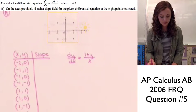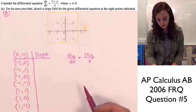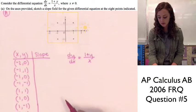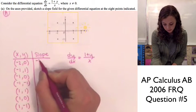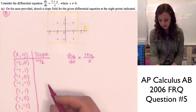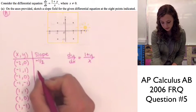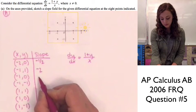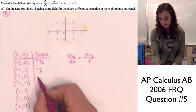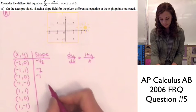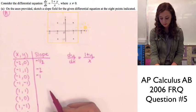Let's go ahead and do that and then graph our slopes. When x = -2 and y = 0, we have a slope of -1/2. When x = -1 and y = 1, we have a slope of -2. When x = -1 and y = 0, we have a slope of -1.